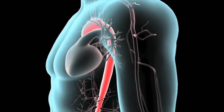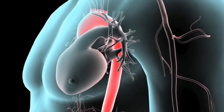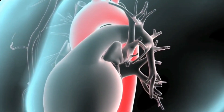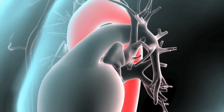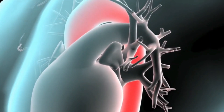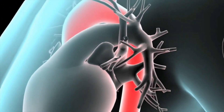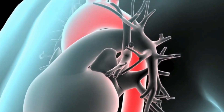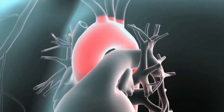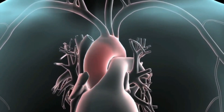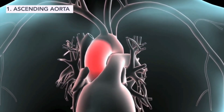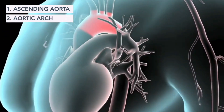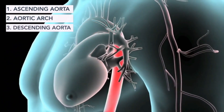The aorta is the largest artery of the body. It carries oxygen-rich blood to the other parts of the entire body. It is divided into four parts: ascending aorta, aortic arch, thoracic or descending aorta, and the abdominal aorta.